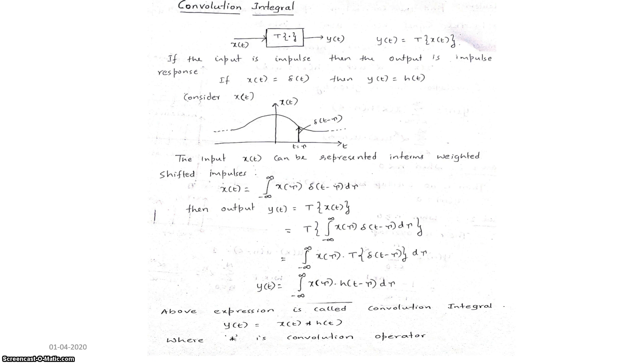If I consider the input signal as an impulse, then the output is the impulse response. So if x(t) equals delta(t), then y(t) equals h(t). Now consider x(t) as a random continuous time signal. Here I consider the impulse signal delta(t minus tau) at t equals tau. For a continuous time signal, the impulse signal delta(t) has value 1 at t equals 0. Similarly, delta(t minus tau) has value 1 at t equals tau.